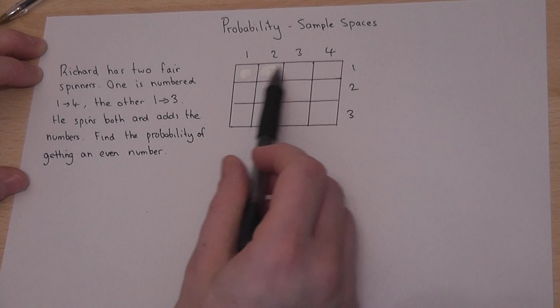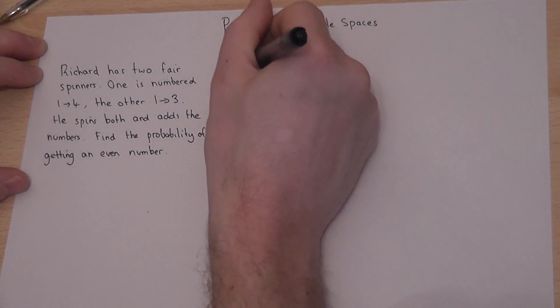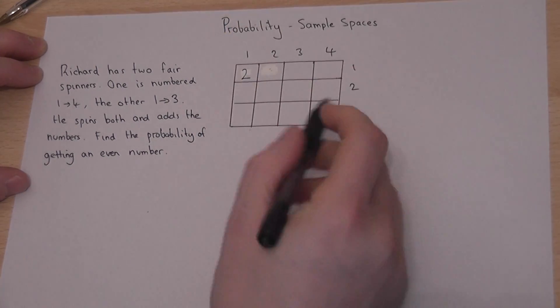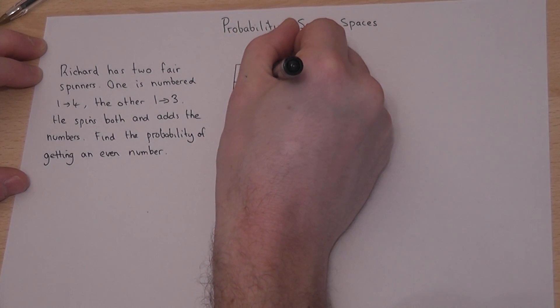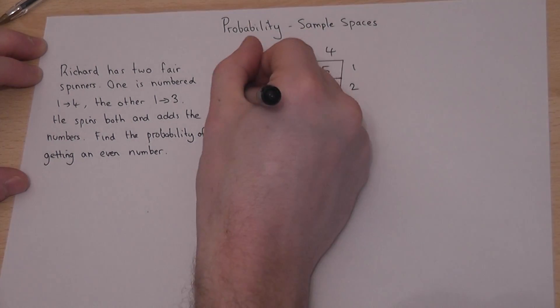In this table we can list what all the actual outcomes are. So one plus one is two, two plus one is three, and we can keep on going adding up all the numbers.